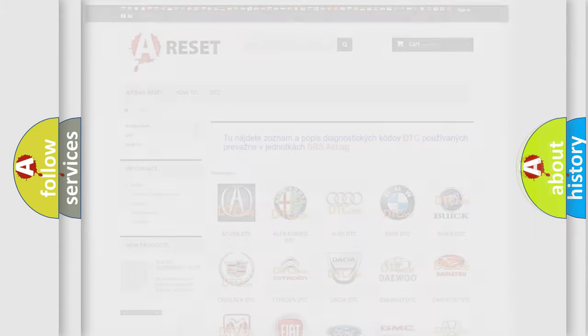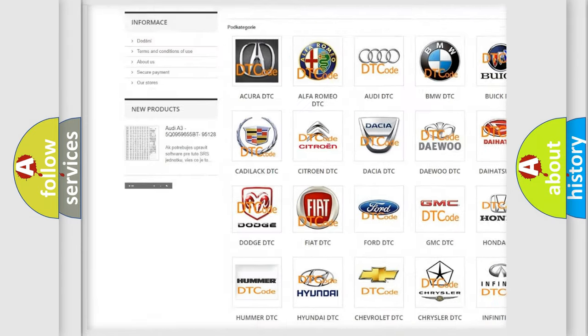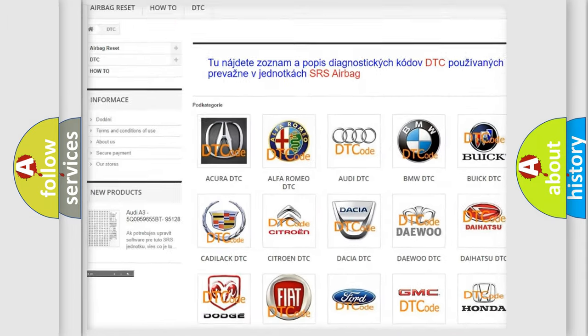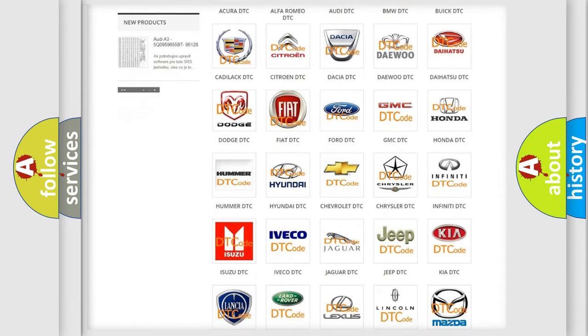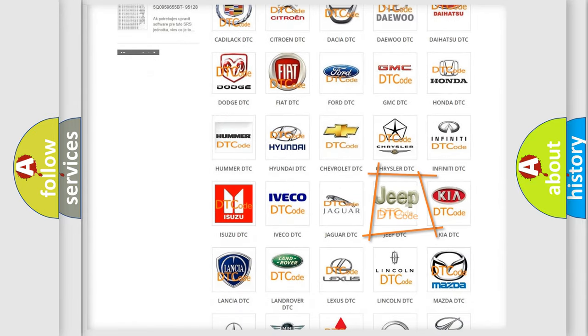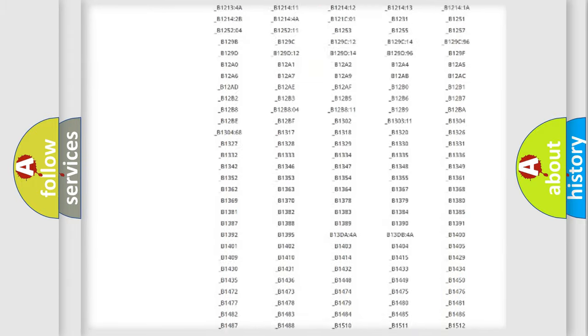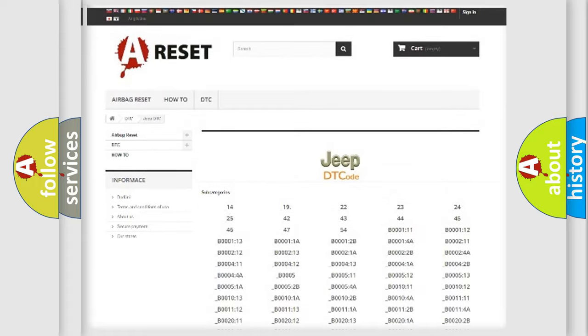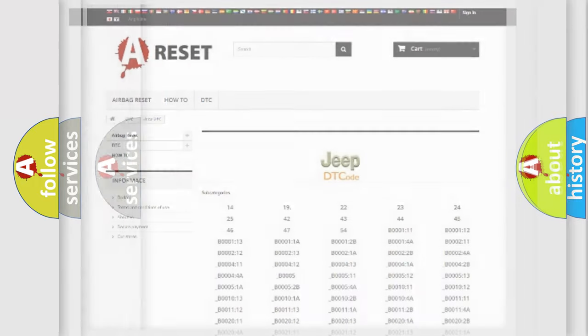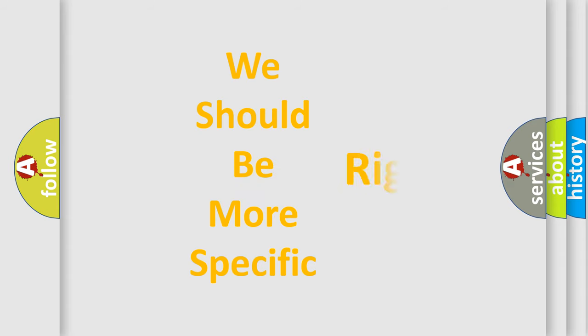Our website airbagreset.sk produces useful videos for you. You do not have to go through the OBD2 protocol anymore to know how to troubleshoot any car breakdown. You will find all the diagnostic codes that can be diagnosed in Jeep vehicles, and also many other useful things. The following demonstration will help you look into the world of software for car control units.